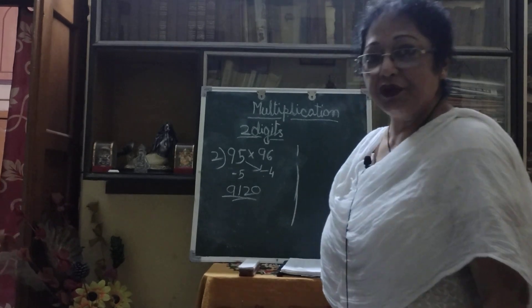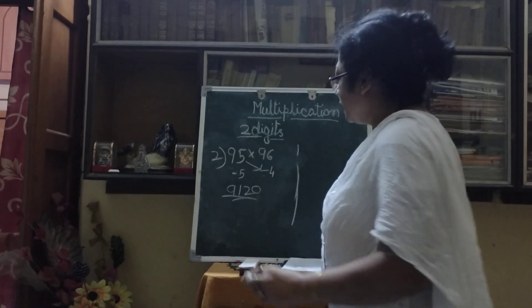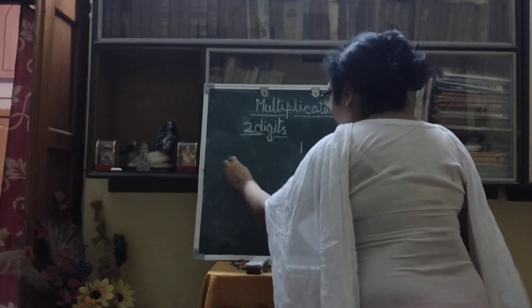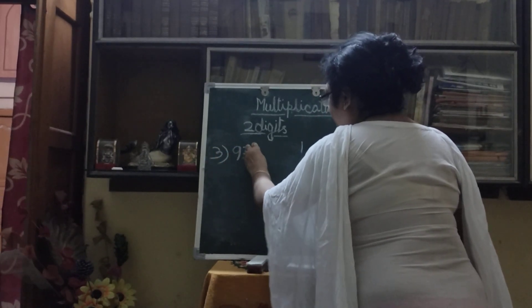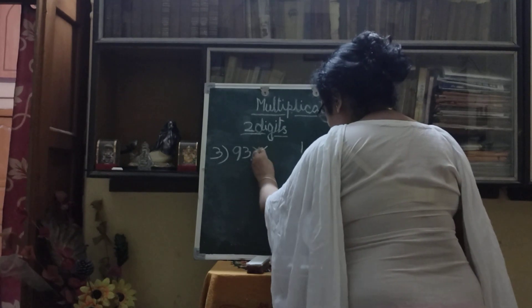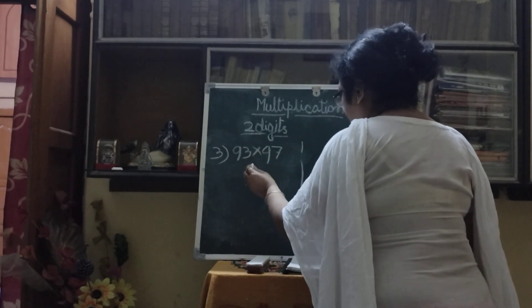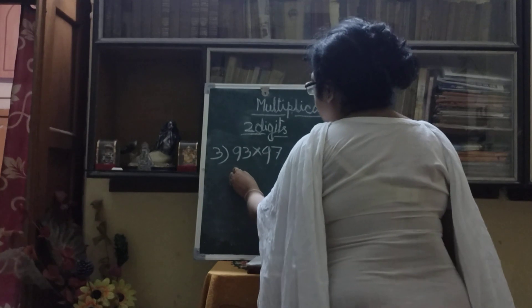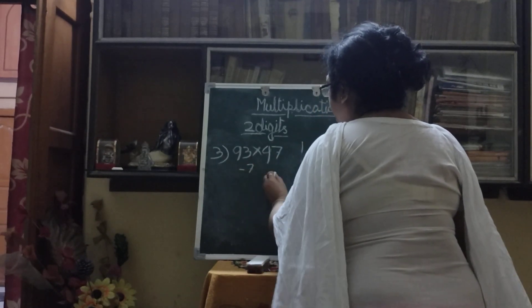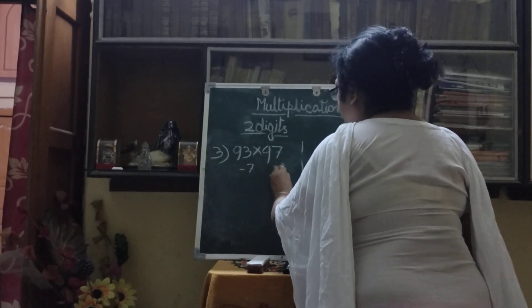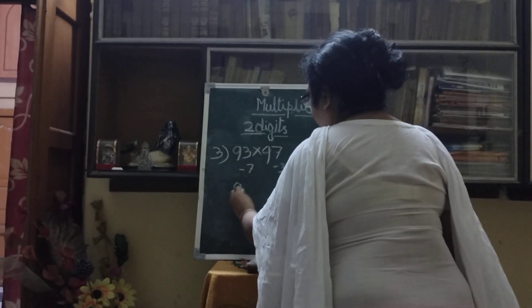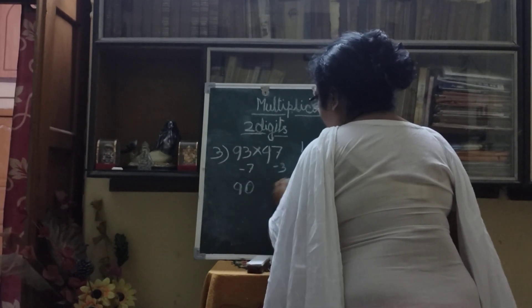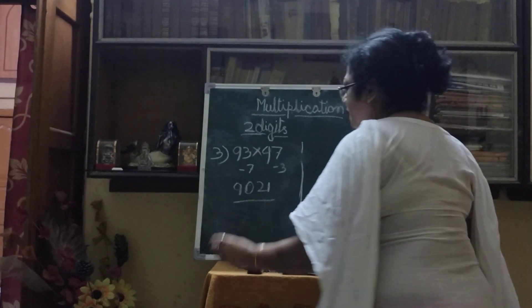One more example I am giving you — I will increase your speed. Next one: 93 multiplied by 97. This one is minus 7, and this one is minus 3. So 93 minus 3 is 90, and 7 multiplied by 3 is 21. So the answer is 9021. Your answer has come.